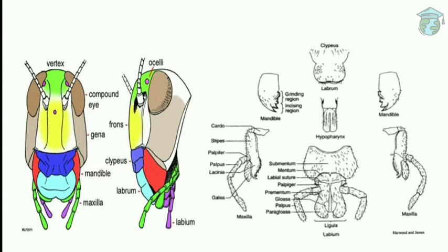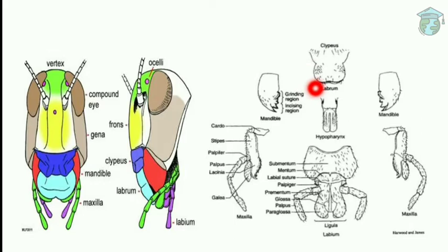Looking at the images: the dark blue color is the clypeus, which is the sclerite of the insect head, and the light blue color is the labrum attached to the clypeus — the upper lip. The two sides are the mandibles, which are the jaws. In the next slide I will explain the maxilla and the labium.